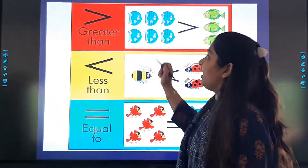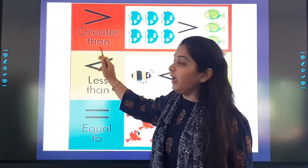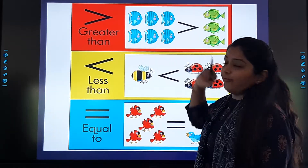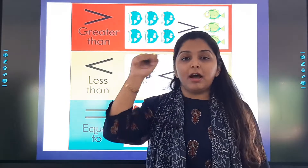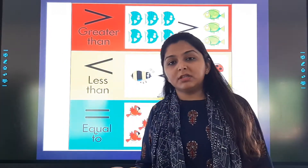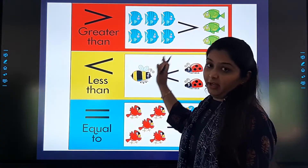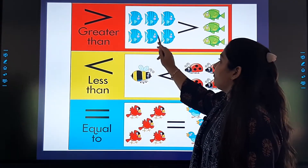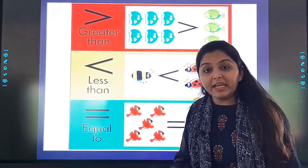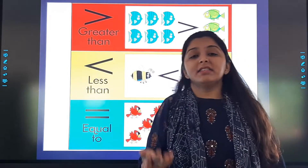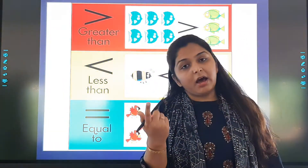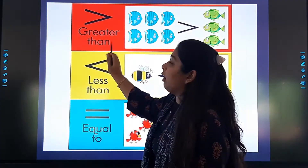Kaise copy karna hai? Sab se pehle, drawing book mein aise greater than ki sign banao ge, and then you will write 'greater than.' Uske baju mein, you will draw a line like this, and here are fishes given to you. Instead of fishes, aap stars bana sakte ho, balls bana sakte ho, aap chote-chote alag-alag dots bhi bana sakte ho. You can use anything, but you have to explain greater than. For example, here there are six fishes, and here there are three — that's why we put the greater than sign here. You can draw six stars or seven stars — the number is up to you. Draw three stars on one side and two or one star on the other side. But you have to be very clear with the concept of greater than.